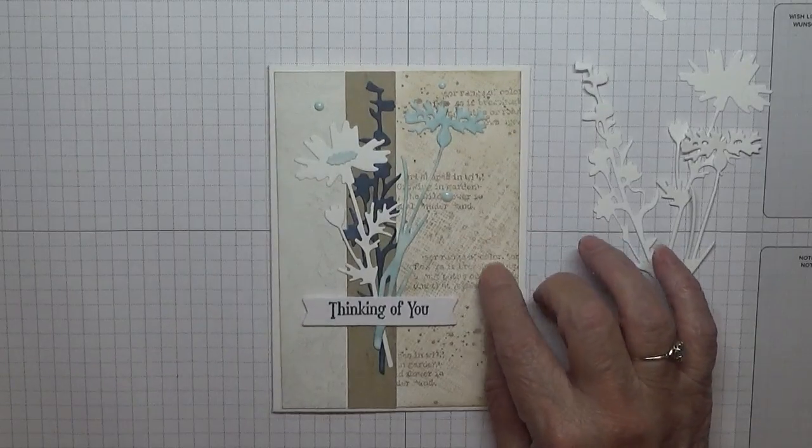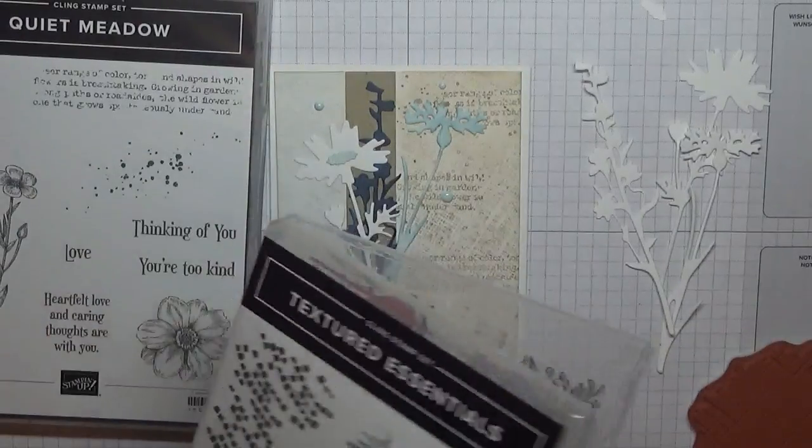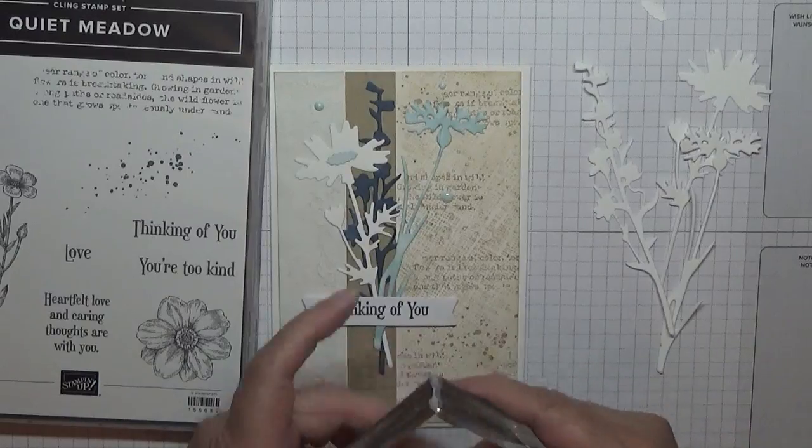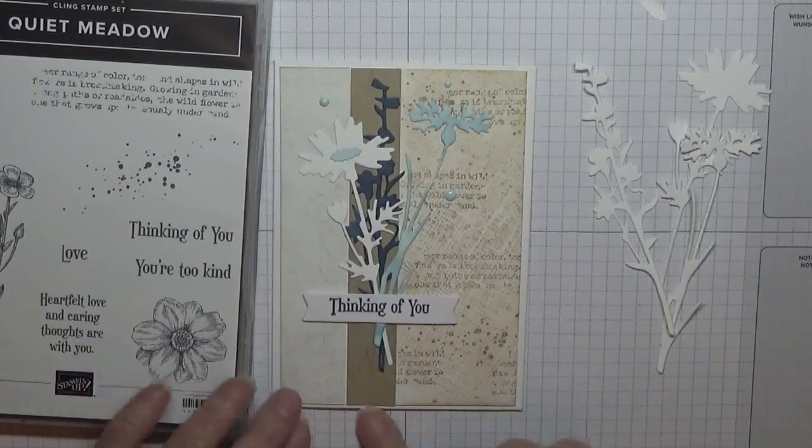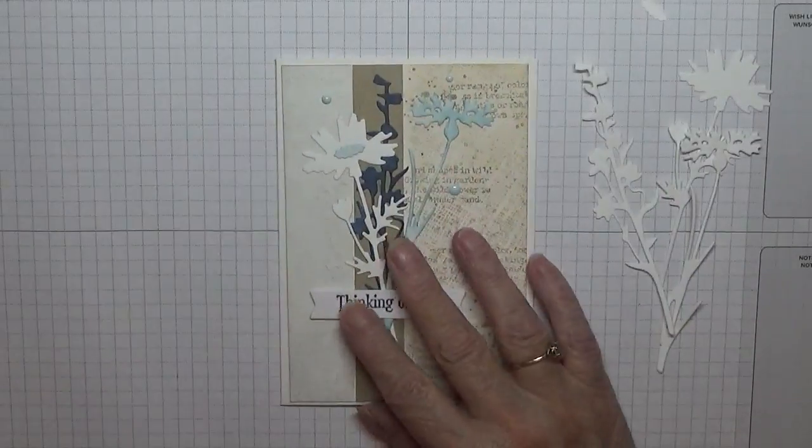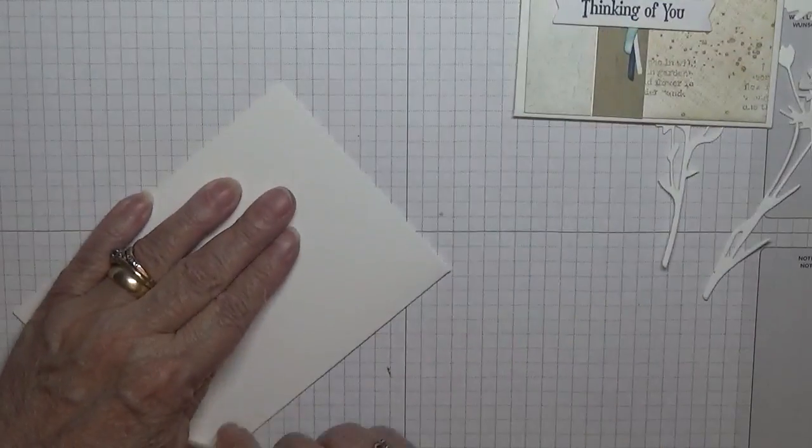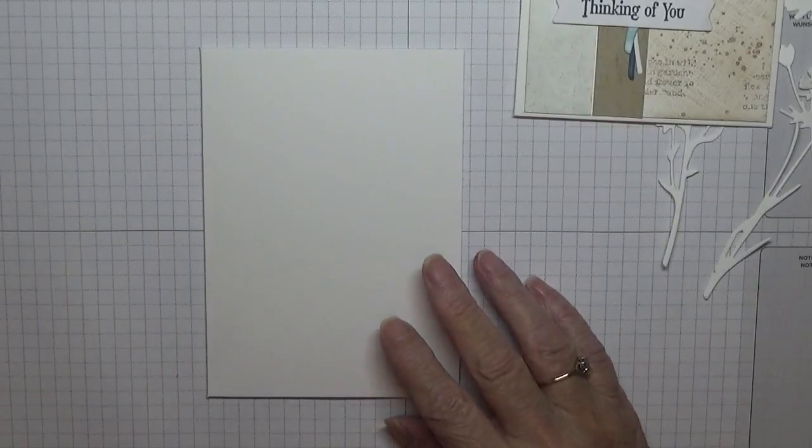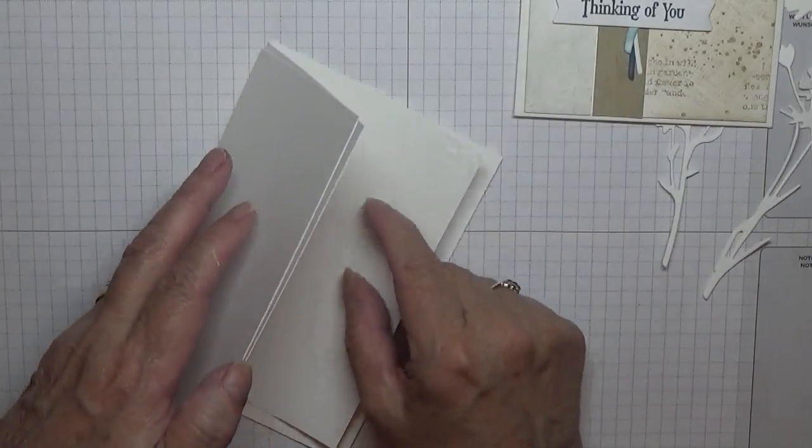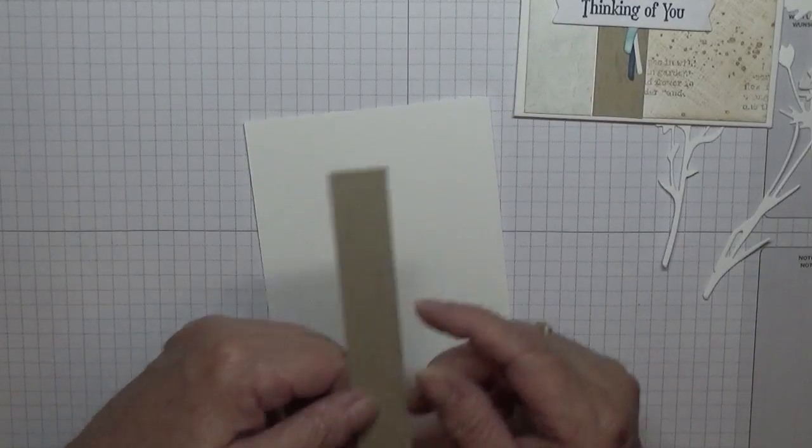For the background I used Quiet Meadow and Textured Essentials. For cardstock I've got a card at eight and a quarter by five and seven eighths, scored at four and one eighth, folded in half and burnished. I have two pieces of whisper white at five and five eighths by three and seven eighths, one for the inside and one for the outside. And I have a strip of crumb cake measuring three quarters of an inch that will go down there. That also needs stamping on.